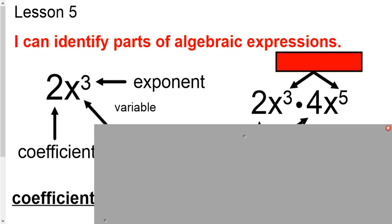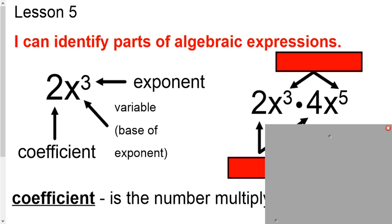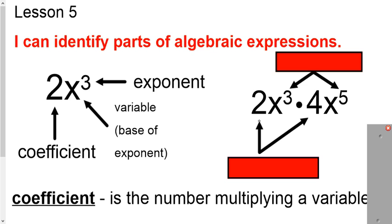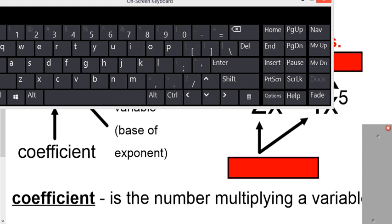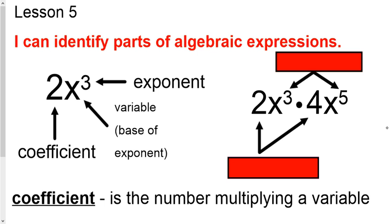We can call that basically a coefficient. And a coefficient is nothing more than a number that's multiplying a variable. So basically that means that any time that you see a number in front of the variable without a plus or minus or division sign in between it, it's a coefficient. It's going to be multiplying the variable.